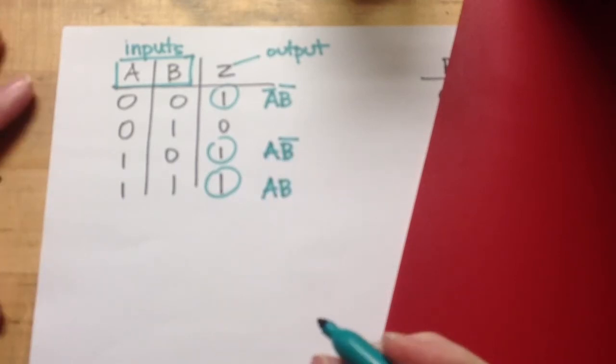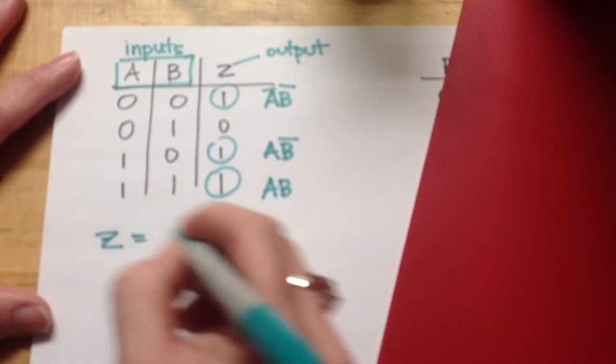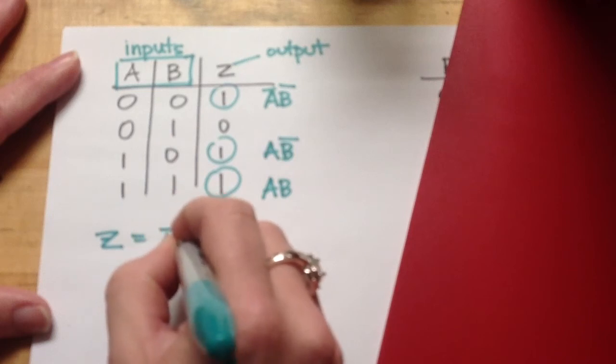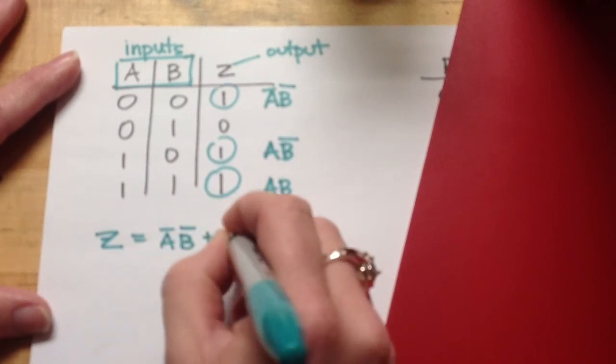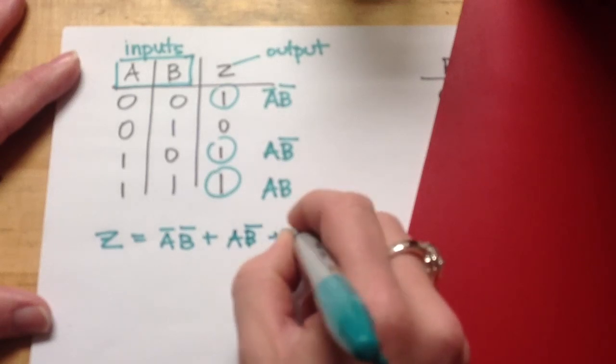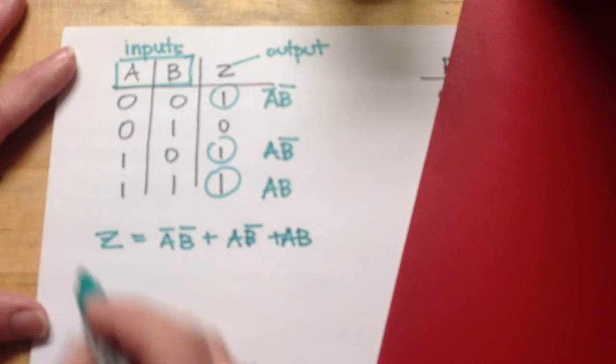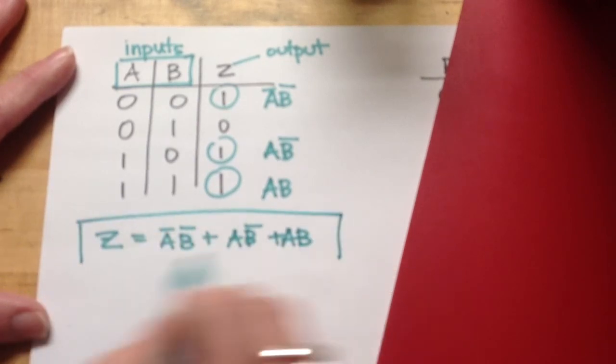So then we would write this final solution as Z is equal to not A, not B, or A, not B, or A, B. So that would be the logic expression for this truth table.